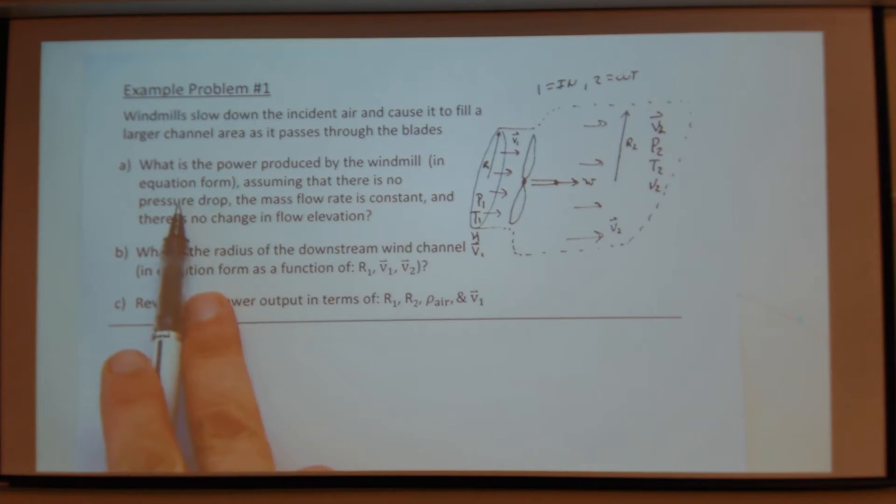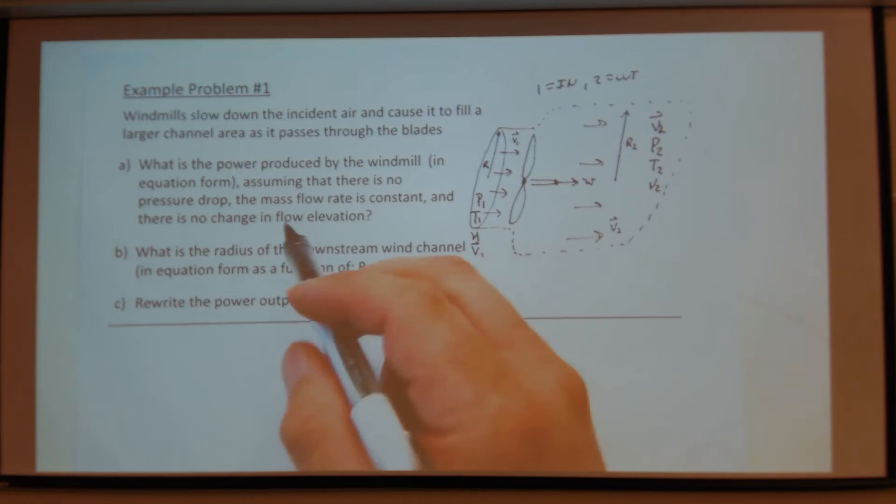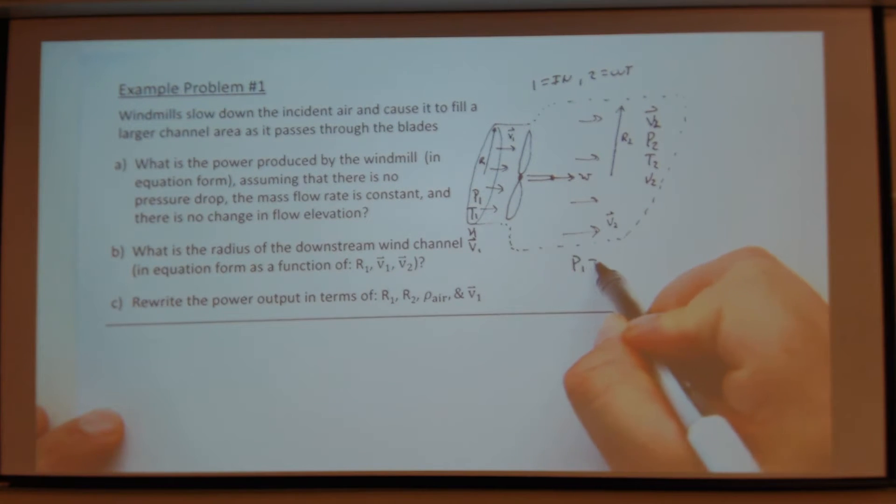So I look at the statement, there's no pressure drop. So no pressure drop, P1 equals P2. Delta P, which is pressure drop, equals zero, right?